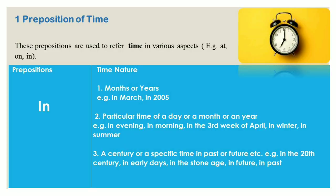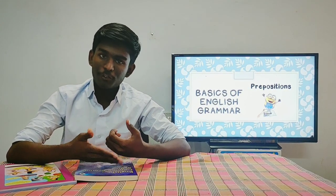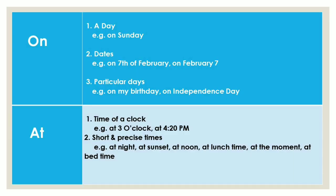The second use of 'in' is for a particular time of a day, month, or year — for example, 'in the evening,' 'in the morning,' 'in the third week of April,' 'in winter,' 'in summer.' On Monday, we all have common prayer. In the third week of April, we will have moral exams. Thirdly, 'in' is used for a century or a specific time in the past or future — such as 'in the 20th century,' 'in early days,' 'in the stone age,' 'in future,' 'in the past.' For example, in the stone age, people got fire by using stones. In future, I will become a doctor or engineer.